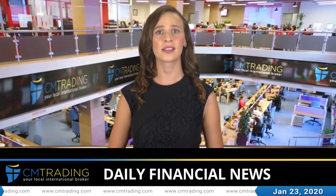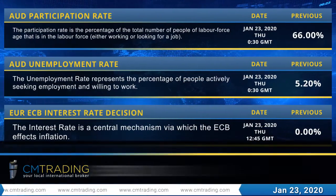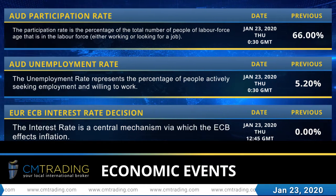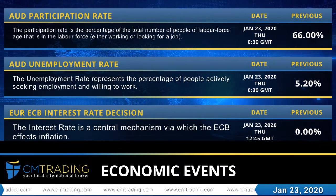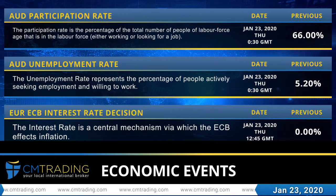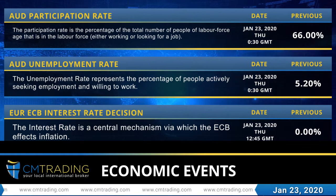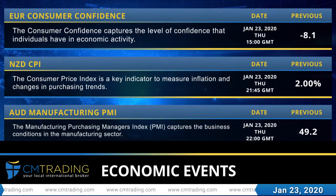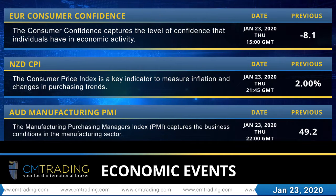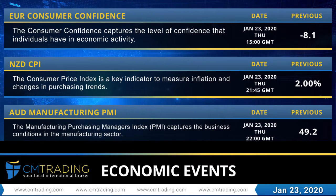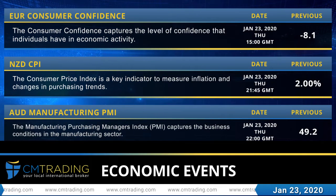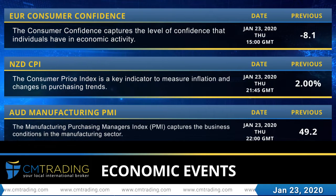Thank you for this. Coming up, today's major economic events: the Australian participation rate will be released at 00:30 GMT; the Australian unemployment rate at 00:30 GMT; the Eurozone's ECB interest rate decision at 12:45 GMT; the Eurozone's consumer confidence at 15:00 GMT; New Zealand's CPI at 21:45 GMT; and the Australian manufacturing PMI at 22:00 GMT.